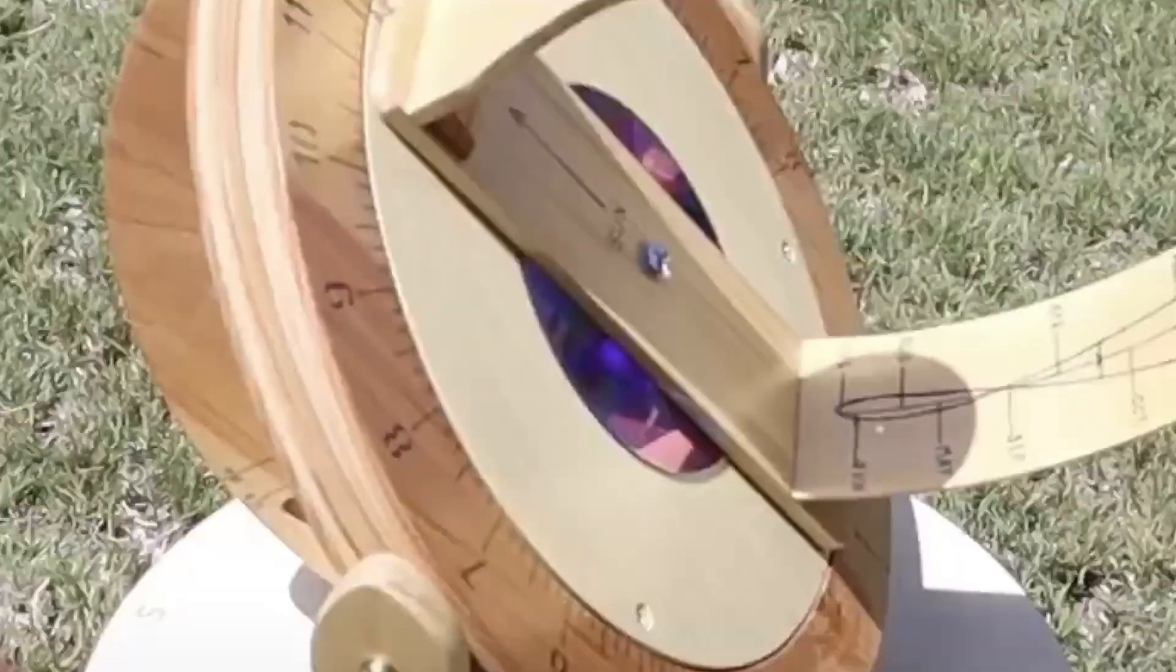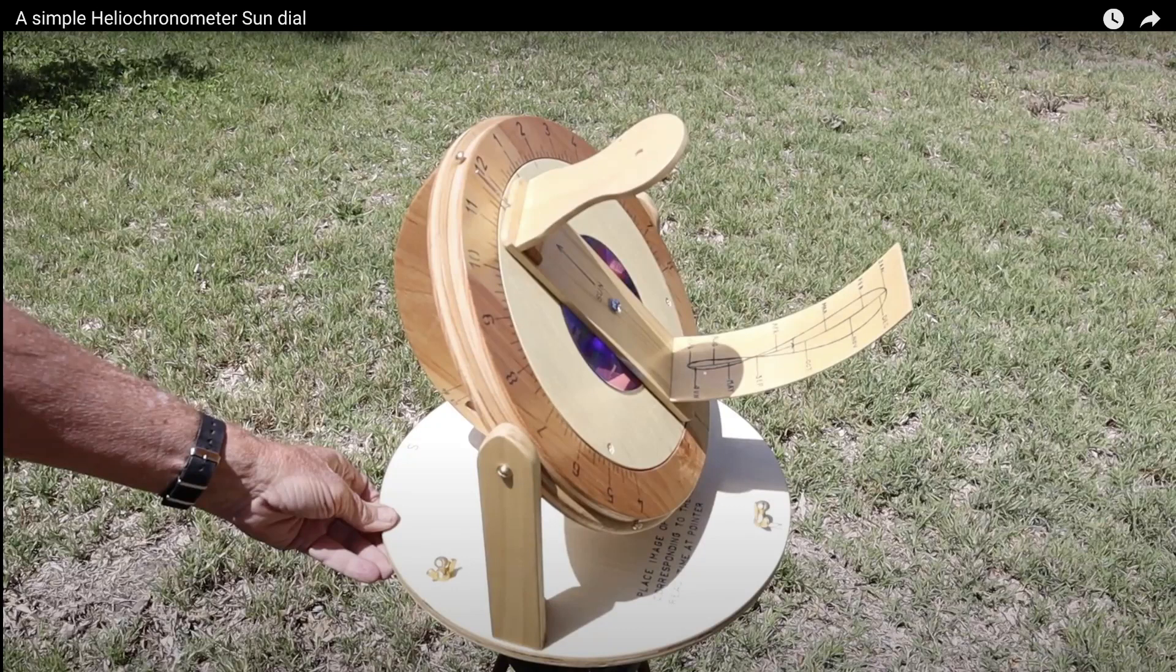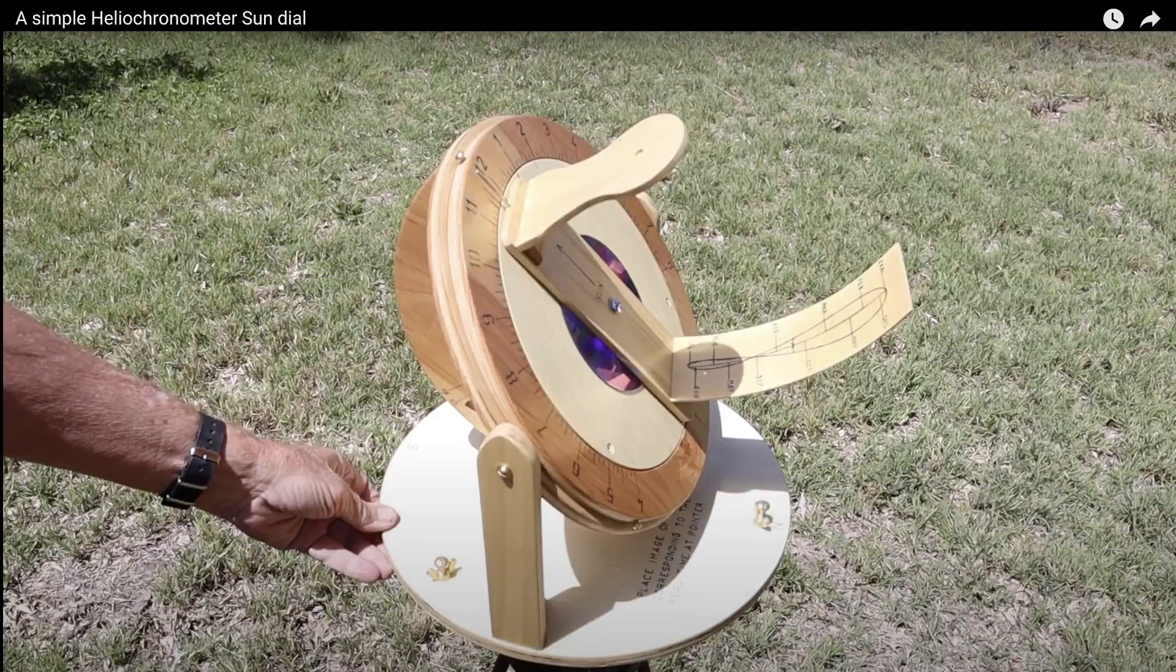Well now that we have a basic understanding of the equation of time and the differences of time by longitude. I want to show you a rather remarkable instrument. One that I'm thinking about building myself. This is a special type of a sundial called a heliocronometer. And the reason that it's called a heliocronometer is that it is extremely accurate. And I'm going to show you the reason that it's so accurate.